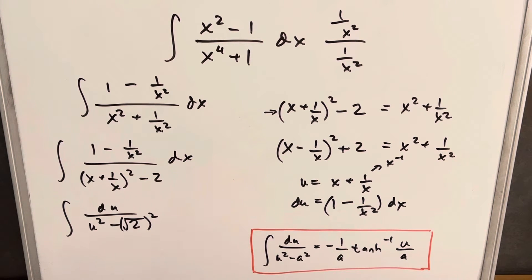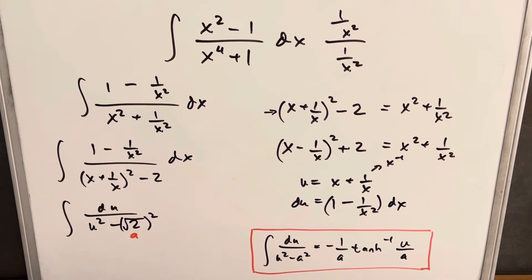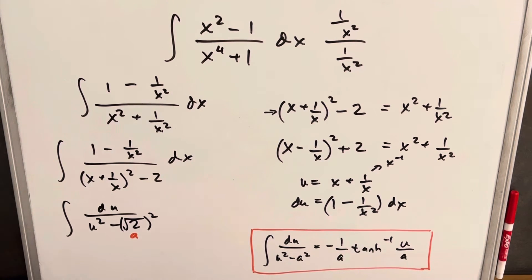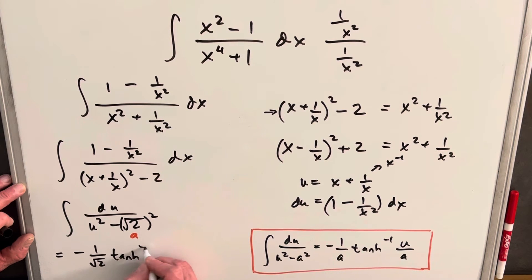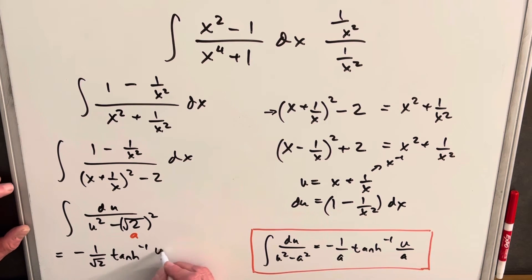We'll call a equal to the square root of 2 and plug into the formula. The result is minus 1 over a, which is the square root of 2, times the inverse hyperbolic tangent of u over the square root of 2, plus C.